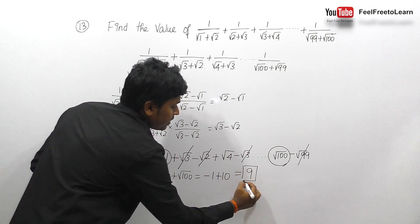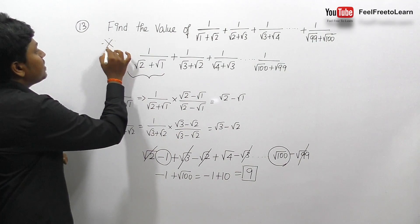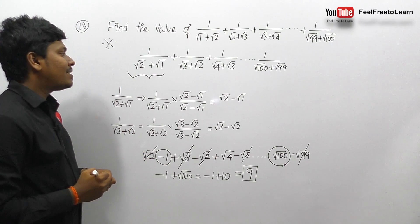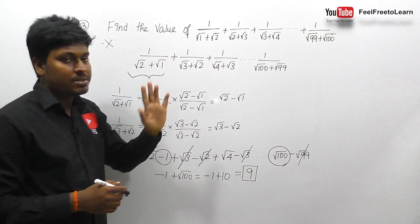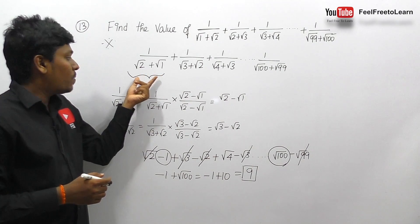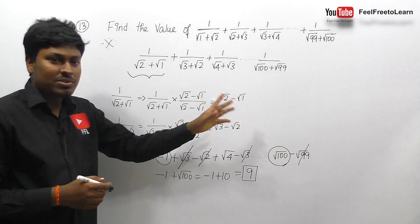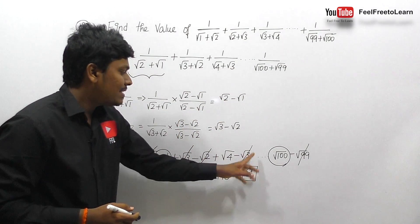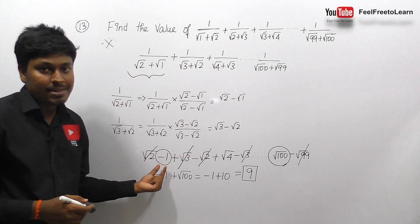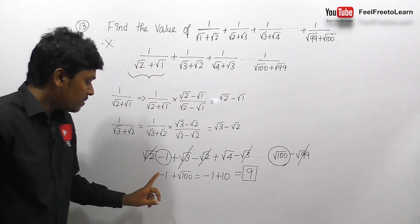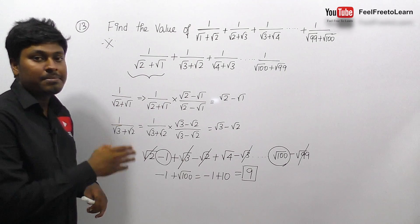So the result is √100 - 1 = 10 - 1 = 9. The answer for question number 13 is 9. This is a very important question — remember it for SSC and railway exams. The key steps: rewrite denominators with larger root first, rationalize each term using conjugates, then recognize the telescoping cancellation leaving √100 - 1 = 9.